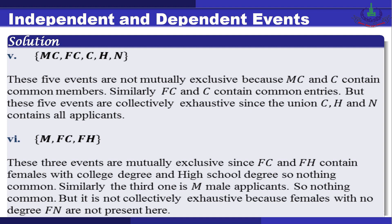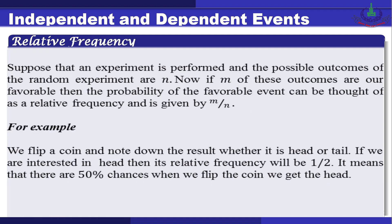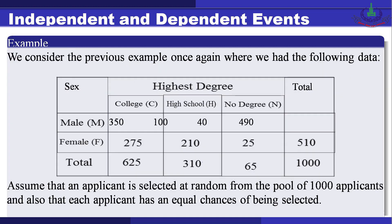Now we define relative frequency. If an experiment is performed with N possible outcomes and M of these outcomes are favorable, then the probability of the favorable event is given by M/N. For example, flipping a coin: if we are interested in heads, its relative frequency is 1/2, meaning there is a 50% chance of getting heads when we flip the coin.